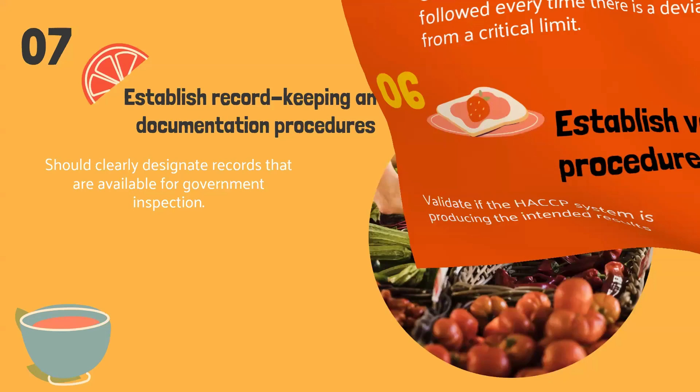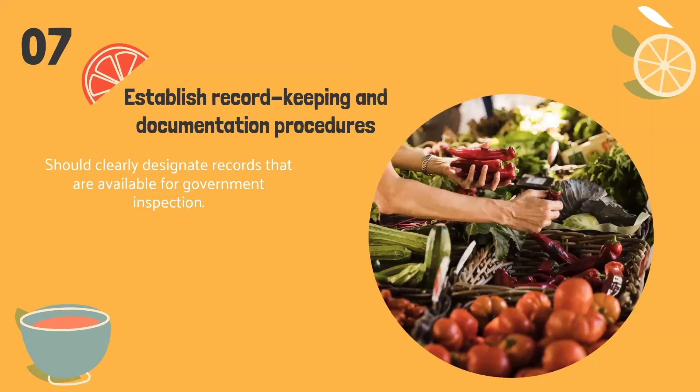Principle number seven, the last principle: establish record keeping and documentation procedures. The HACCP plan must be on file at the food establishment to provide documentation relating to CCPs and to any corrective actions taken for critical deviations in production and disposition. It should clearly designate records that are available for government inspection.